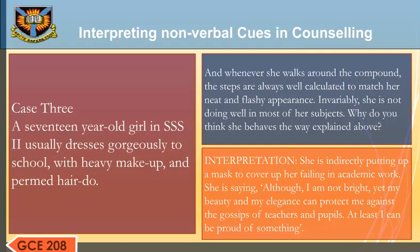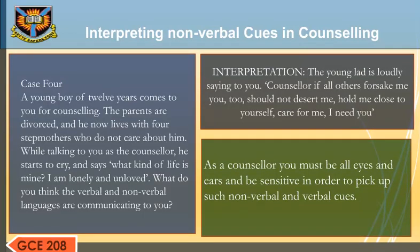'At least I can be proud of something.' Case 4: A young boy of 12 years comes for counseling. His parents are divorced and he now lives with four stepmothers who do not care about him. While talking to the counselor, he starts to cry and says, 'What kind of life is mine? I am lonely and unloved.' Interpretation: The young lad is loudly saying, 'Counselor, if all others forsake me, you too should not desert me. Hold me close to yourself. Care for me. I need you.'